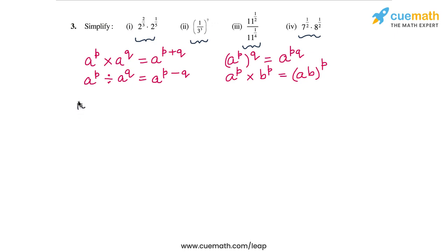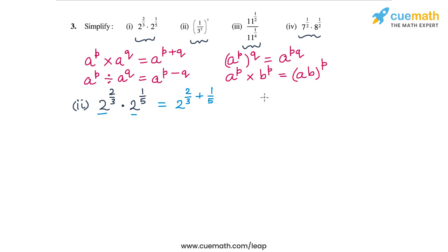For the first part, we calculate 2 to the power 2/3 times 2 to the power 1/5. The base is common, so the exponents add: 2 to the power (2/3 + 1/5). Taking the LCM of 15, 2/3 becomes 10/15 and 1/5 becomes 3/15, giving 10 plus 3 over 15, which is 13/15. So the answer is 2 to the power 13/15.